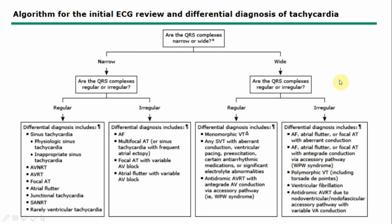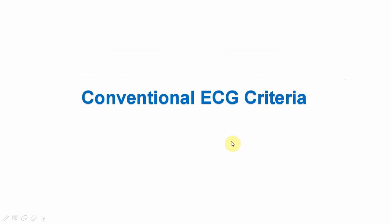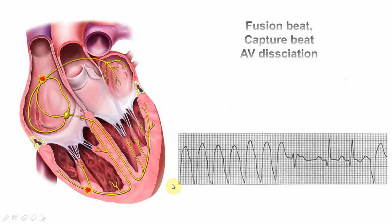Without going into further detail on these various topics — I have a separate video for that — let's move to the diagnostic approach. Let me orient you with a diagram showing the heart: right atrium, right ventricle, left atrium, left ventricle, the ascending aorta, the superior vena cava, and the inferior vena cava.